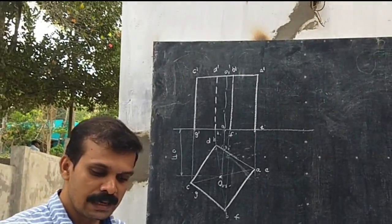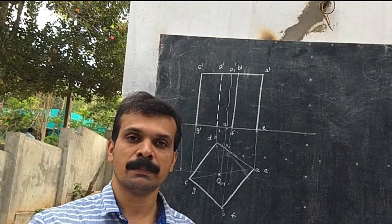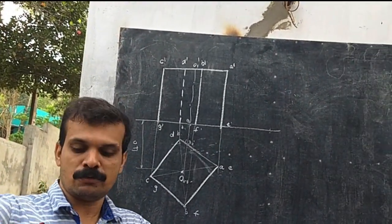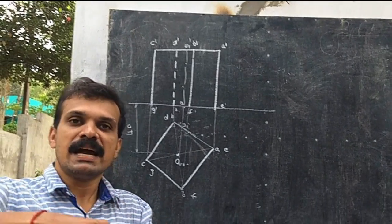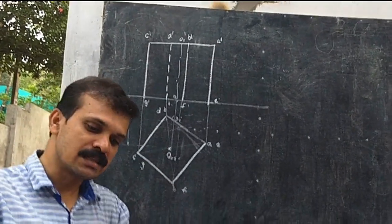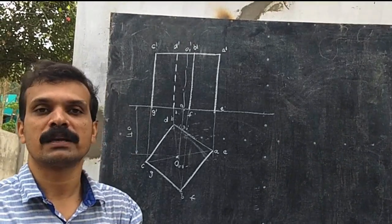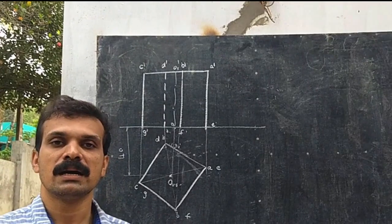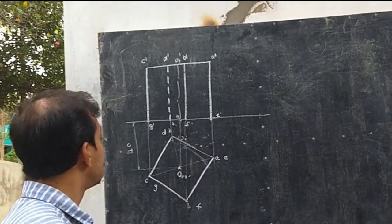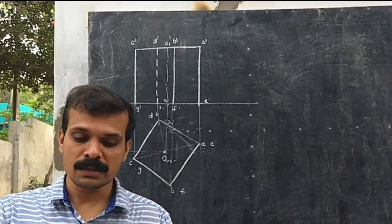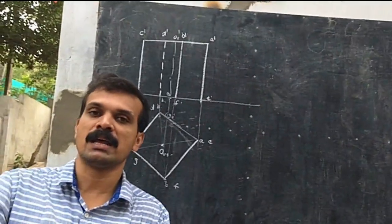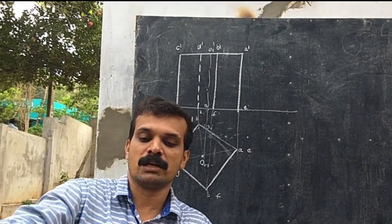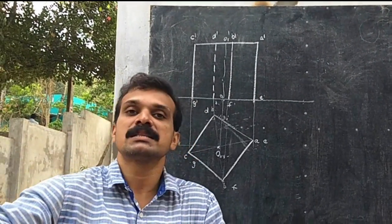Now it is given that the solid is cut by a vertical section plane — that is a plane perpendicular to HP and parallel to VP. That means a plane like this, and it cuts the solid at a distance of 10mm in front of the vertical axis. So where is the vertical axis? If this is the cube, this will be the center — this is the vertical axis. So 10mm in front means from this point at a distance of 10mm, this will be the vertical section plane.